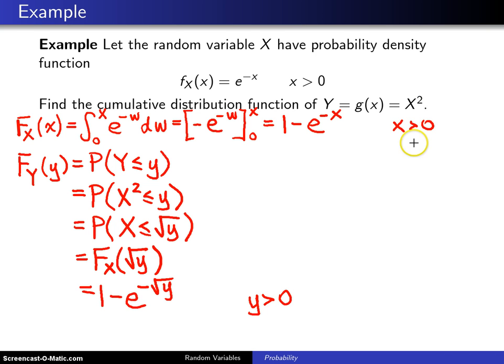We use the symbol script A for the support of X, and we use the symbol script B for the support of Y.